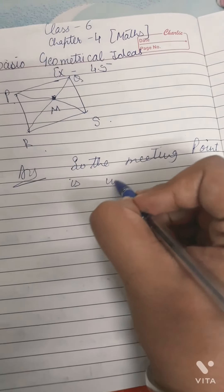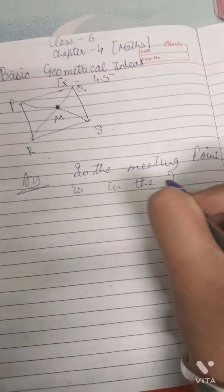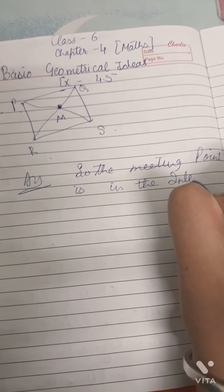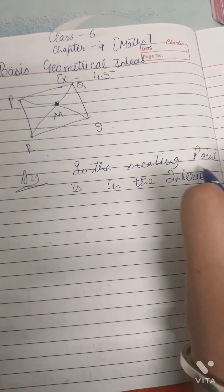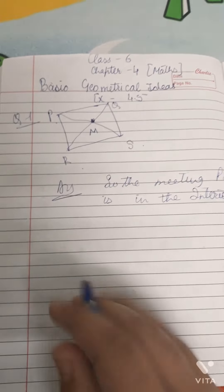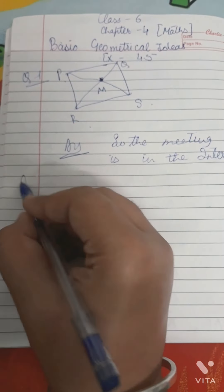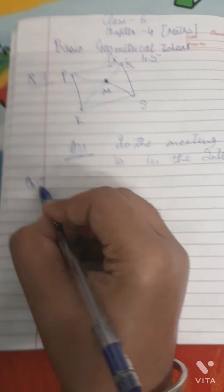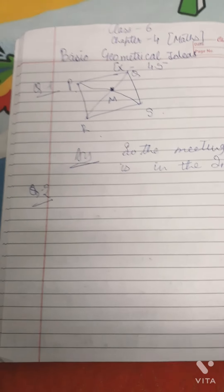The meeting point is in the interior. Yes, the meeting point of the diagonals will be in the interior. Let's come to question number two.